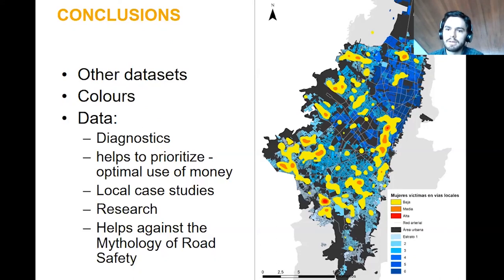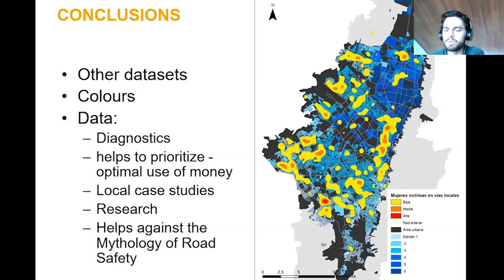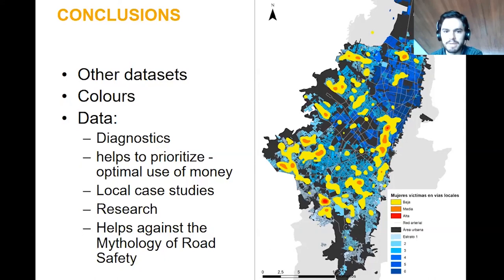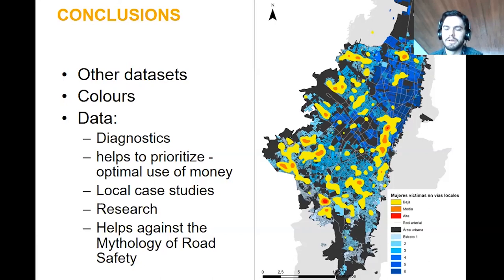Based on what I told you, I think we can use data in at least five stages of any political or decision-making process. First, we can use it for diagnostics — we will be able to tell what's going on with our city, state, or country. It's very helpful for targeting measures to whatever our problem is, and it will help us prioritize and optimally use all resources — money, human resources, and time — to have better results in a faster way.